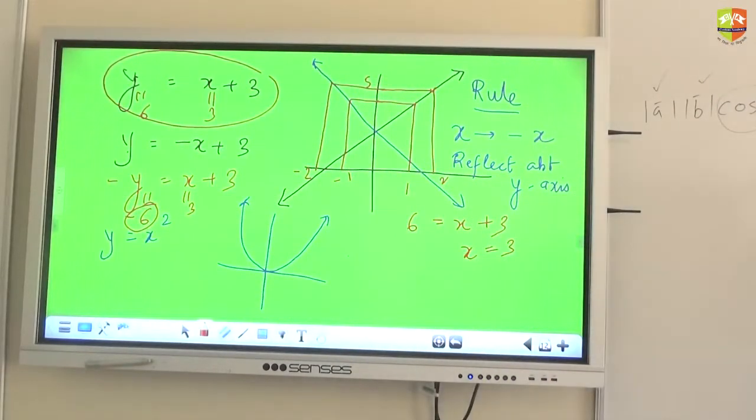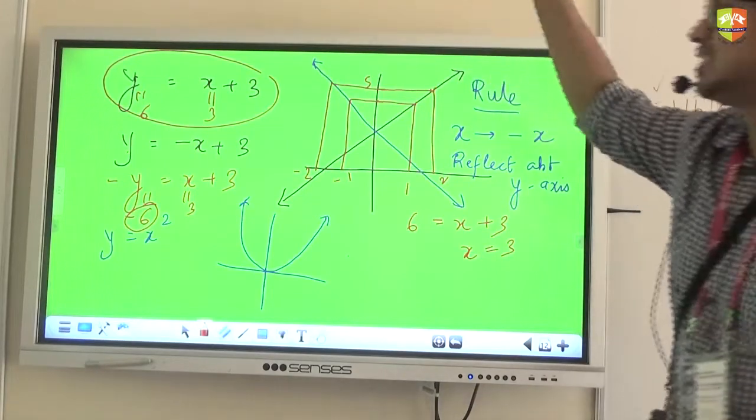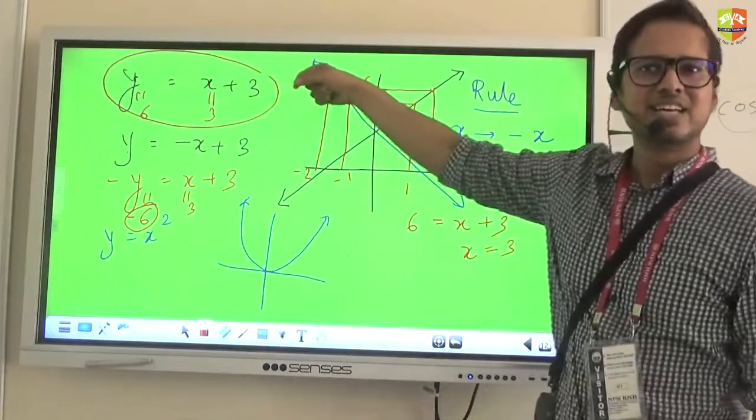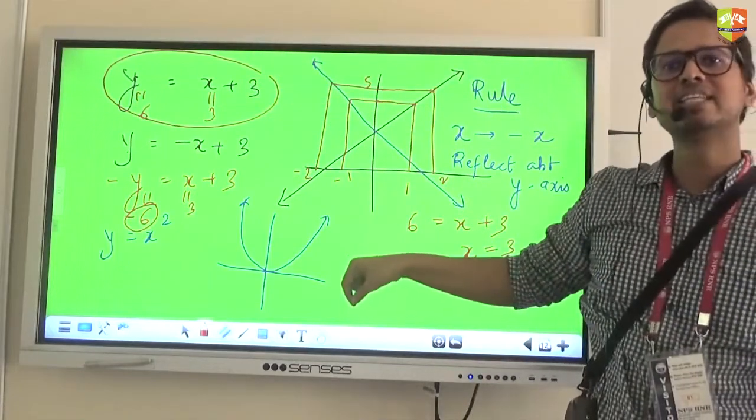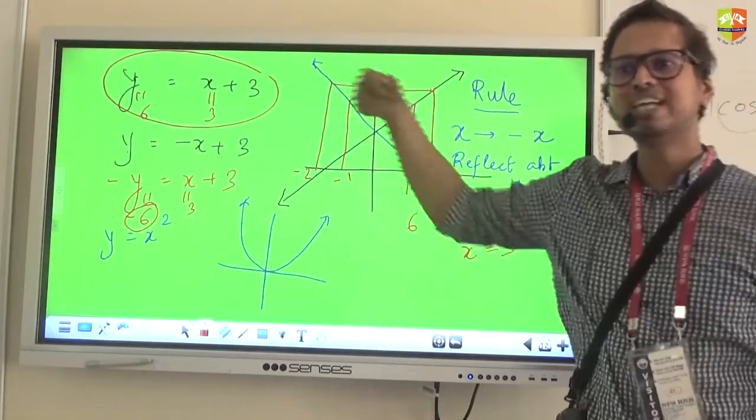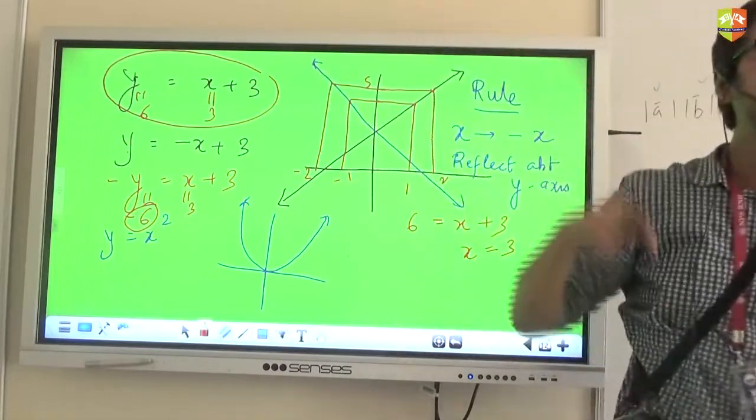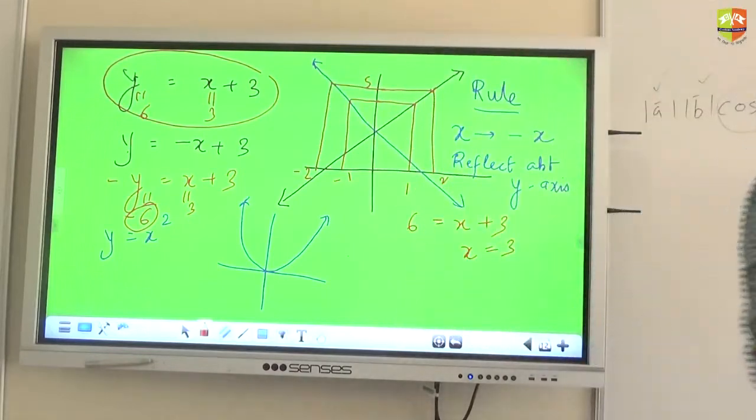I am not saying negative Y. So what is happening? For the same point 3, 6, now I am going to 3, minus 6. That means Y is becoming negative. When is Y becoming negative? It is when you take its mirror image about X axis.